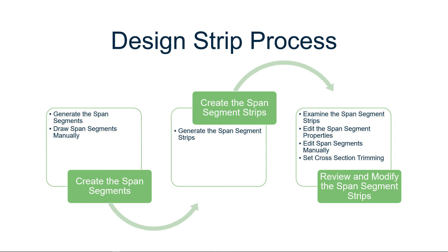Now that we've discussed the terminology we will be using to generate our basic design strips, let's also discuss the design strip process. The first step in creating your design strips is to create your span segments. There are tools available to either generate the span segments automatically or draw them manually. The next step is to create the span segment strips using the span segments you created, through an automatic process.